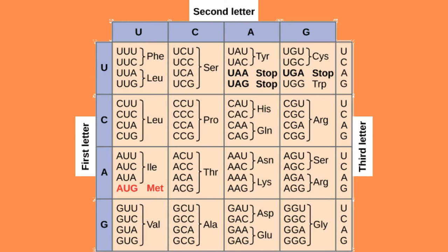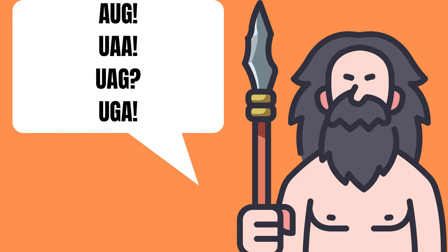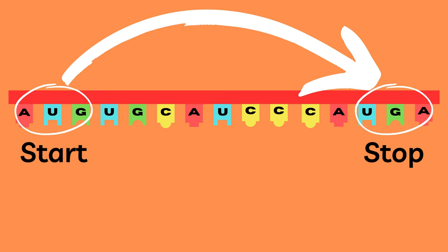Before we do anything else we need to find a start codon and a stop codon. From the table we can quickly notice that the start codon is AUG. The stop codon will either be UAA, UAG, or UGA. For some reason, thinking about a caveman helps me remember all four of these start and stop codons. The space in between the start and stop codon is known as the reading frame.